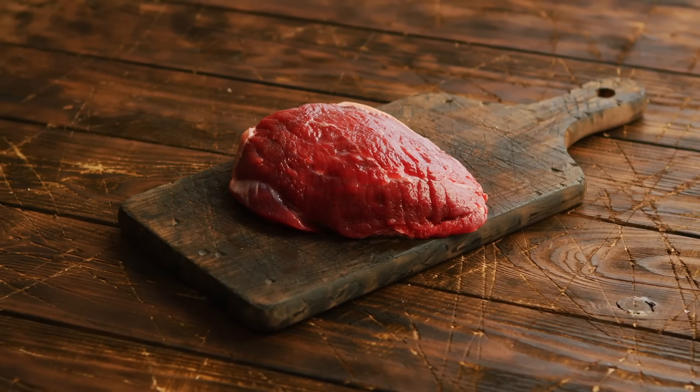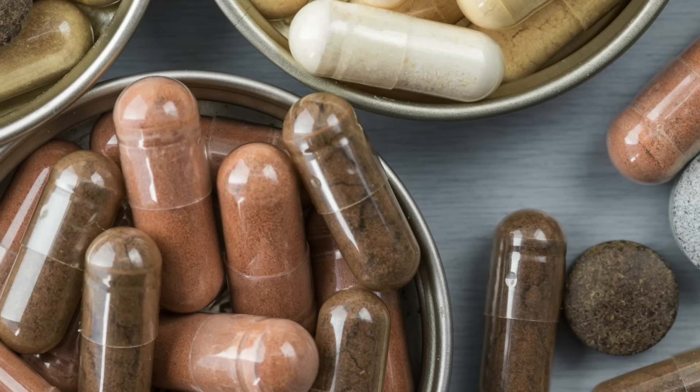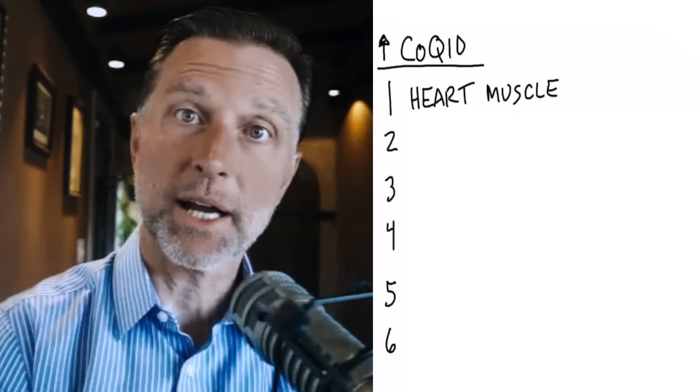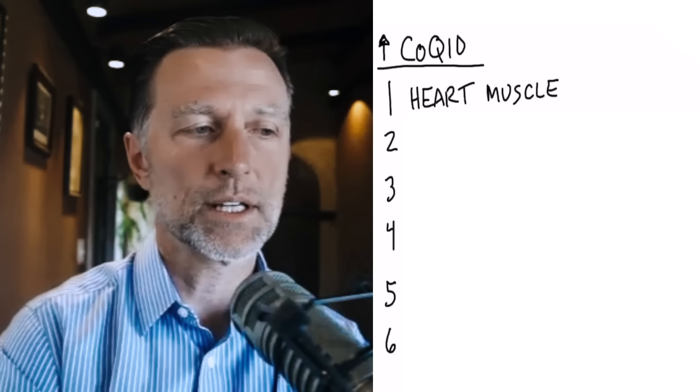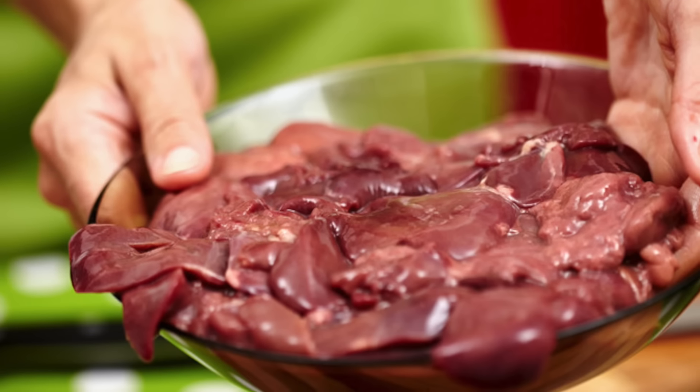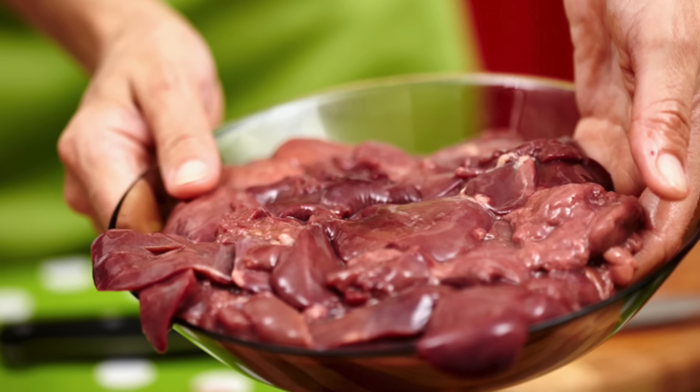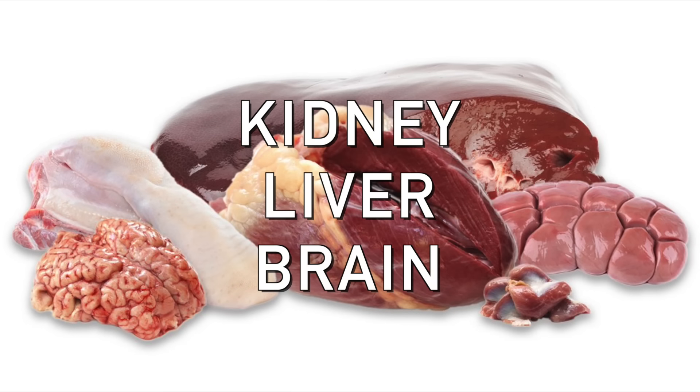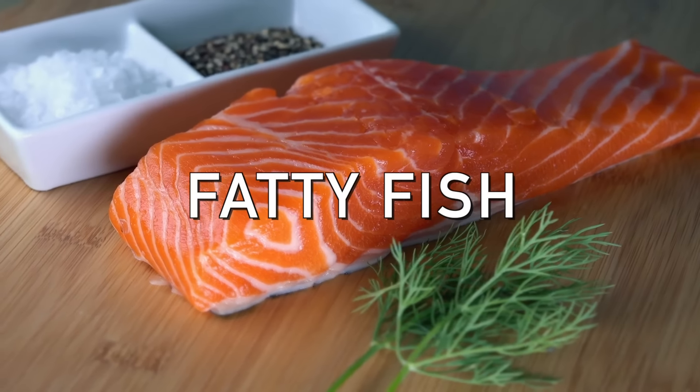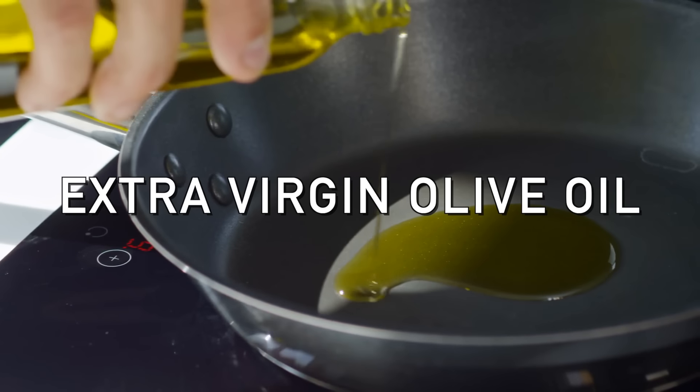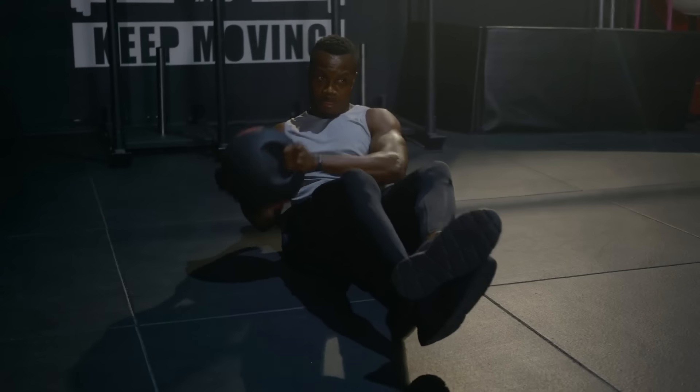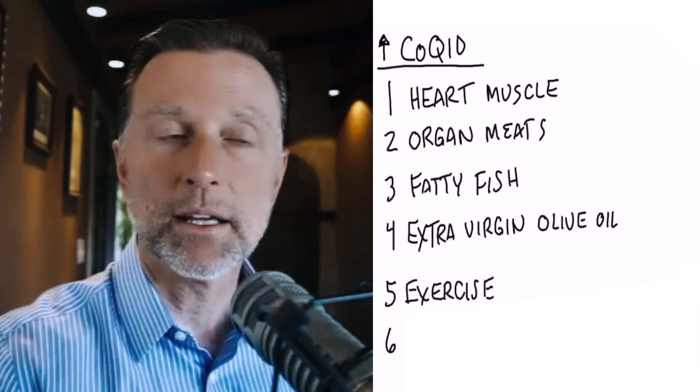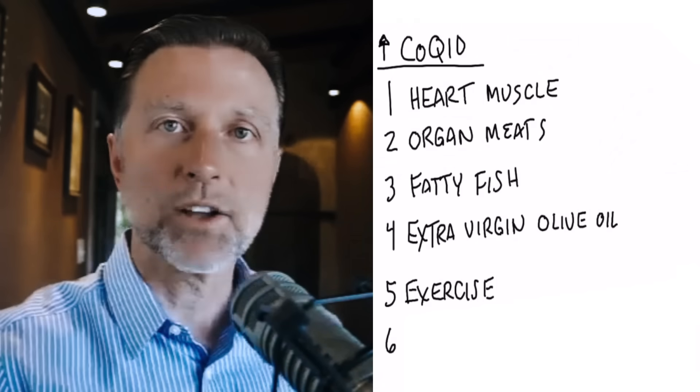But you can actually find some grass fed heart, or you can get it as supplements, or find a high quality source. But out of all the organs in our bodies and other animals, the heart has the most coenzyme Q10. And so another good source of coenzyme Q10 is in other organ meats, like kidney, liver, brain. Coenzyme Q10 is also in fatty fish. It's even in extra virgin olive oil. When you exercise, you can increase the number of mitochondria that you have, and you can indirectly increase the amount of coenzyme Q10 that your body makes just by doing regular exercise.